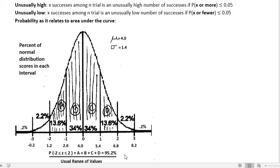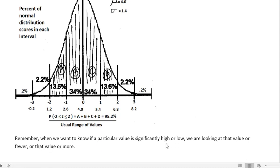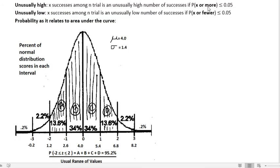Area and probability relate. So we can see most of that area is shaded when we're talking about the usual values. And remember, if we want to know if a particular value is significantly high or significantly low, we're looking at that value or fewer, or that value or more, like we saw here.